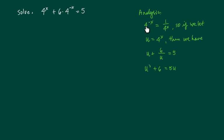Here's the analysis. u to the minus x - anything to a negative exponent is 1 over that to the positive exponent. So if we let u equal to 4^x, we're doing a variable substitution. Then we have u plus 6 over u equal to 5, which is really easy to solve because it's just a quadratic equation. We can either factor or we can use the quadratic formula.